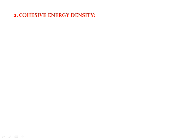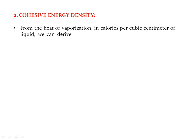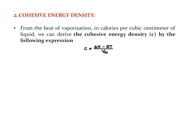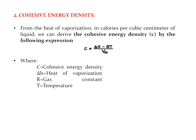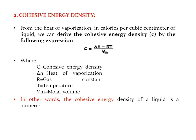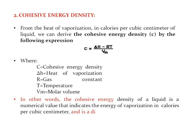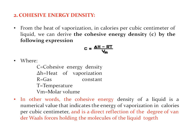From the heat of vaporization in calories per cubic centimeter of liquid, we can derive the cohesive energy density by the expression: C = (ΔH − RT) / Vm, where C is the cohesive energy density, ΔH is the heat of vaporization, R is the gas constant, T is the temperature, and Vm is the molar volume. In other words, the cohesive energy density is a numerical value indicating the energy of vaporization in calories per cubic centimeter, and is a direct reflection of the degree of van der Waals forces holding the molecules of liquid together.